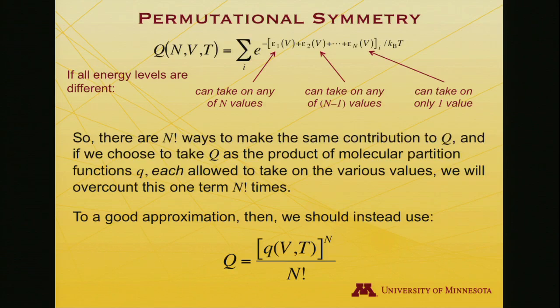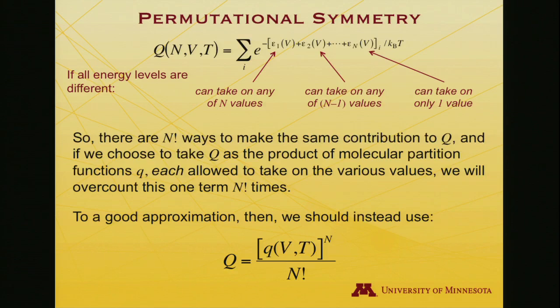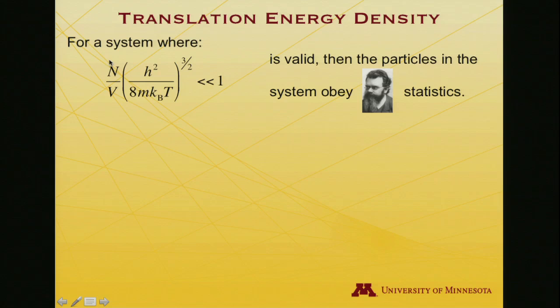So let me return to this question of, is it possible for two particles to be in the same state, at the same energy level? And, the rule that one can use is, if this expression here, number of particles divided by volume, times Planck's constant squared, divided by 8, times the mass, times Boltzmann constant, times the temperature, all raised to the 3 halves power. If that expression is considerably less than 1, then Boltzmann statistics are valid, the division by n factorial to compute the ensemble partition function is valid, the particles in the system will obey Boltzmann statistics.